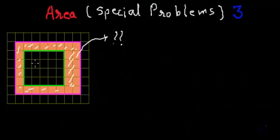So how do we find the area of such figures? If we look carefully, this particular area is actually sandwiched between two shapes. The outer shape is a rectangle which I am going to call ABCD, and the inner shape is also a rectangle but of smaller dimensions. So let's call that EFGH.